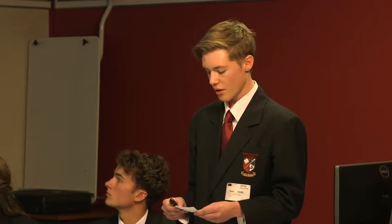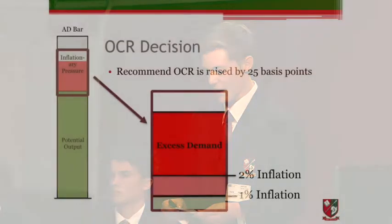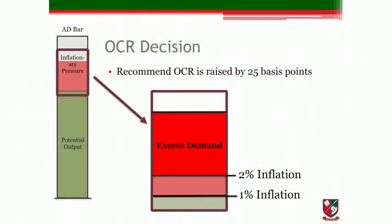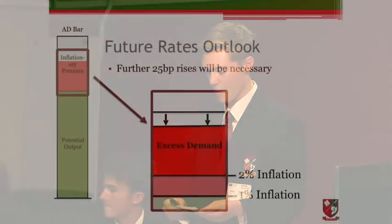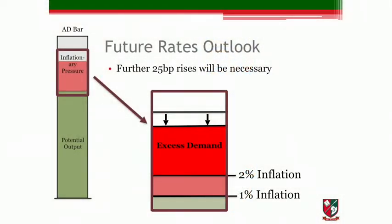However, our decision will also cause an appreciation of the NZ dollar. While high terms of trade will buffer most primary industries from the higher NZ dollar, other export industries will suffer. This will effectively increase our dependence on a few commodities, increasing our vulnerability to overseas markets. Going back to the AD bar, you can see that despite our OCR rise, inflation will still exceed 2% over the medium term. We therefore recommend further 25 basis point rises in the OCR over the next year until construction activity peaks — the OCR will probably need to rise to about 5%.